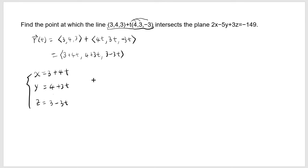And now that you have this plane, I want to find the intersection between this plane with this line. That's what we are trying to do. Then if you write that equation here, 2x - 5y + 3z equals negative 149.